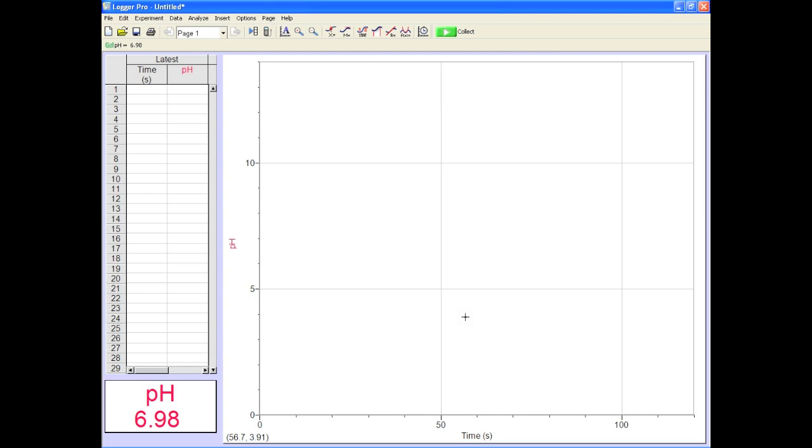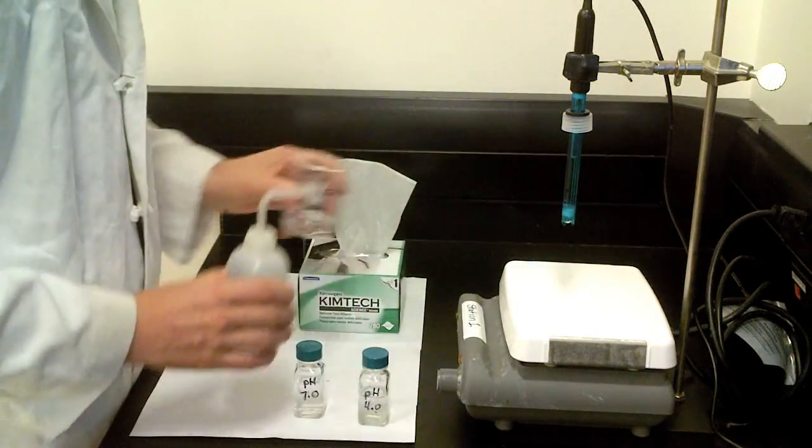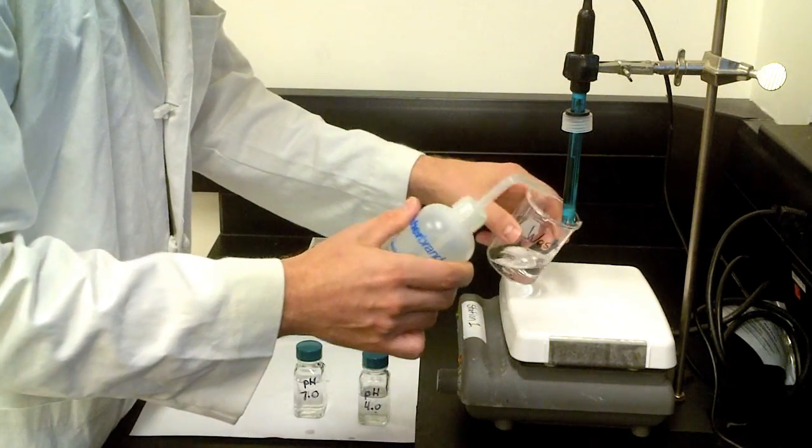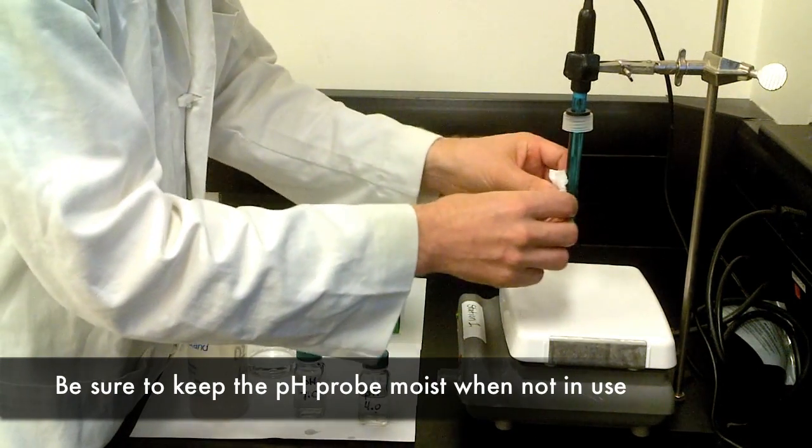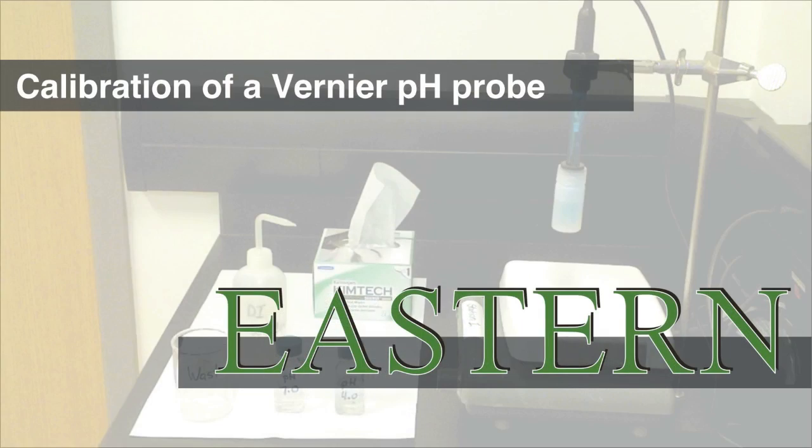Now, this is important. Naked pH probes should never be kept exposed to the air for long. If you're ready to do your experiment, rinse the probe and stick it in your sample, otherwise make sure to soak it in a water bath to keep it happy. Now you know how to calibrate the Vernier pH probe.